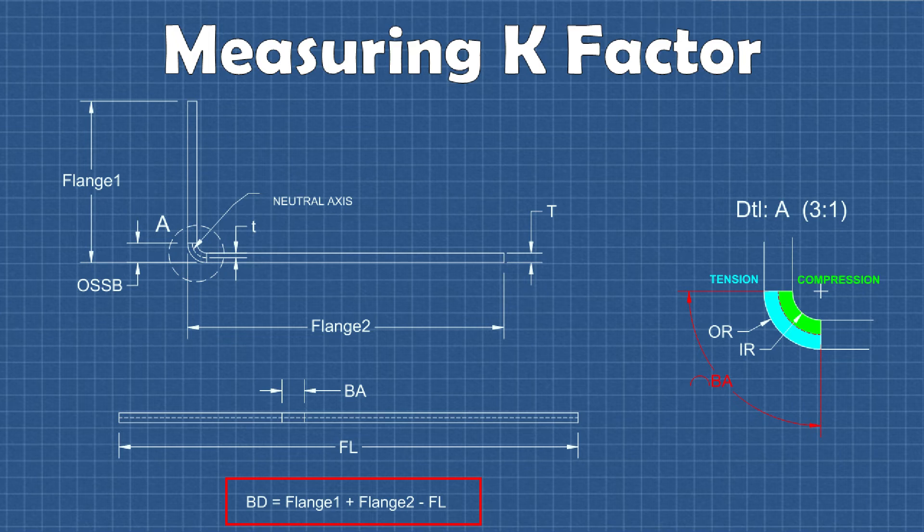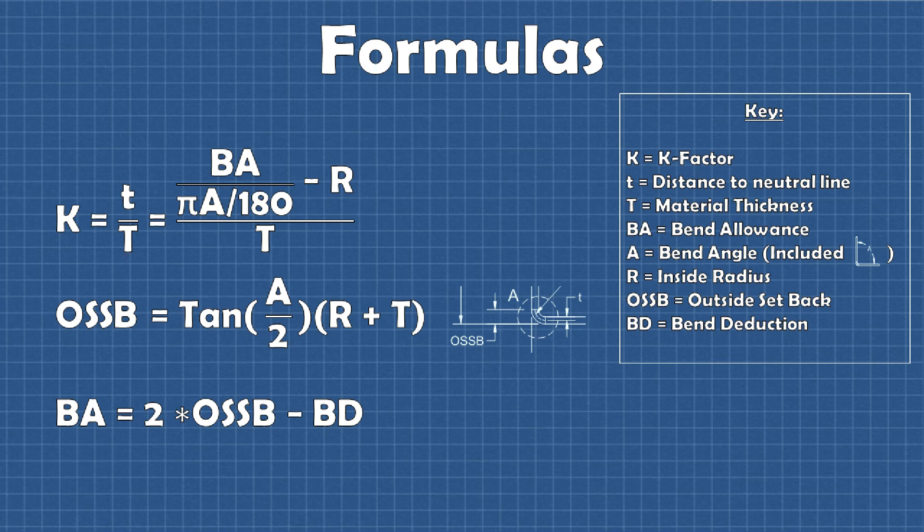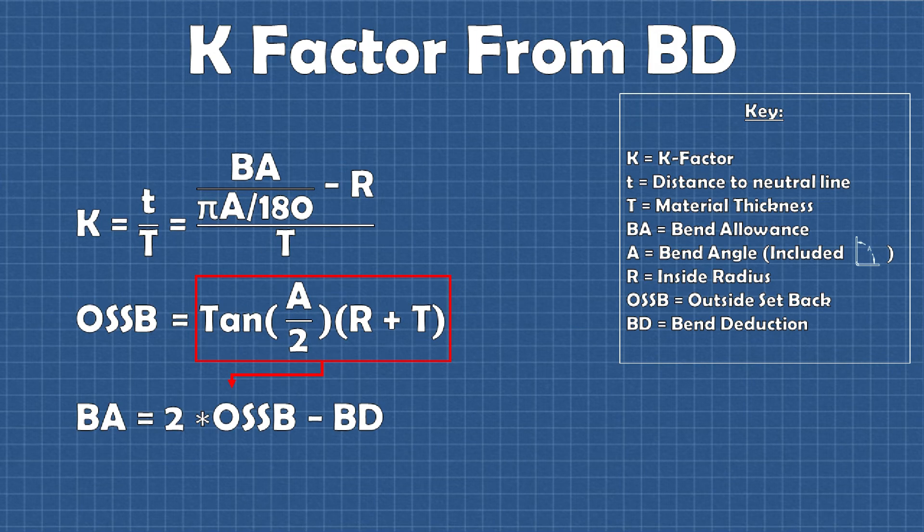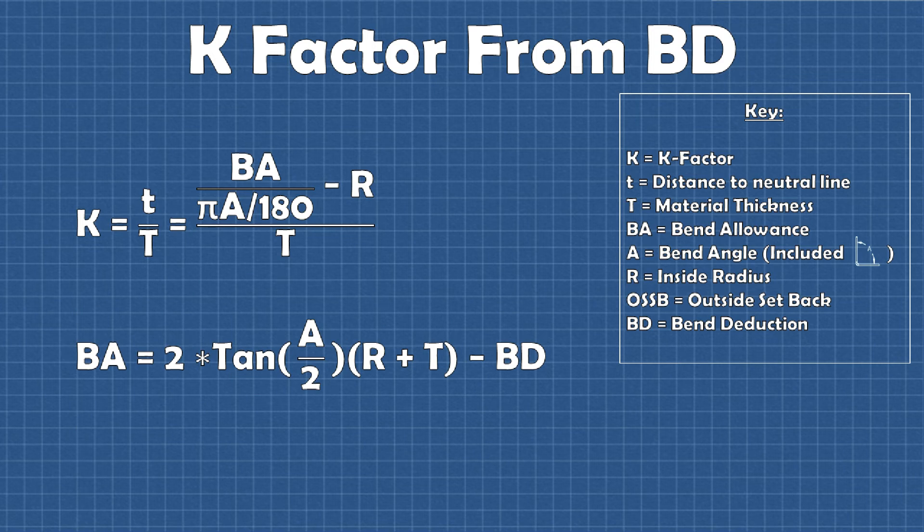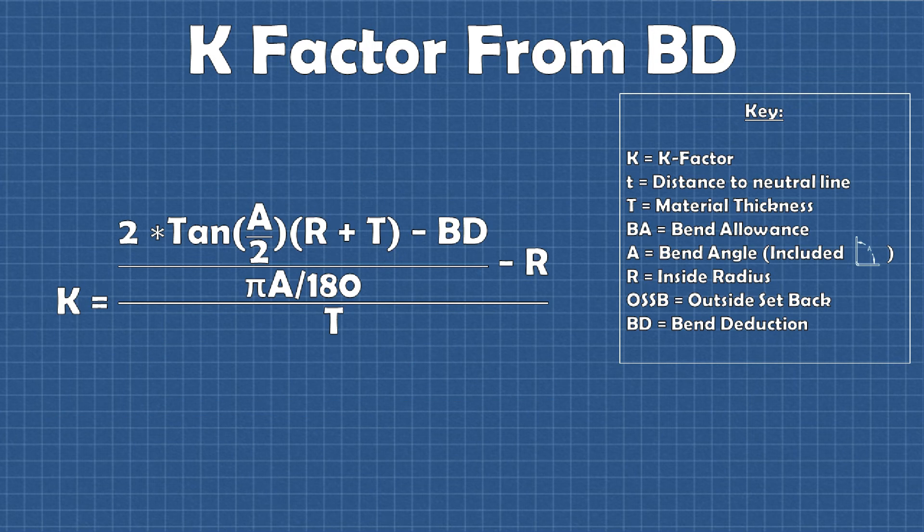Once we know the bend deduction, we can use some formulas to back calculate the k-factor of the bend. We will need to know the formula to calculate k-factor from bend allowance, the formula to calculate outside setback, and the formula to calculate bend allowance from bend deduction. Once we have those equations, we can do some substitution to come up with an equation to get k-factor from the bend deduction. First by substituting the outside setback equation into the bend allowance equation, then by substituting that equation into the k-factor equation. That gives us this monster of an equation that will allow us to calculate the k-factor because all the variables in this equation are things that we can directly measure from the physical part.